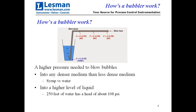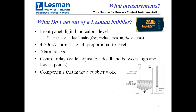If you install a bubbler, what do you get out of it? There's a front panel indicator that shows you level with units — inches, feet, or millimeters. You get a 4 to 20 milliamp signal out that's proportional to level. There are also alarm relays, or if you want to configure it that way, a control relay with wide-adjustable deadband so you can do pump-up or pump-down applications, plus all the other components like the constant flow regulator that actually make a bubbler work.